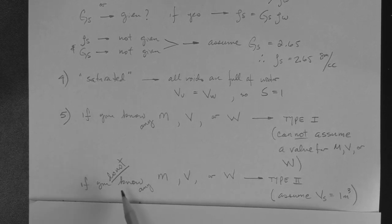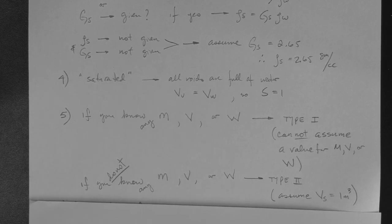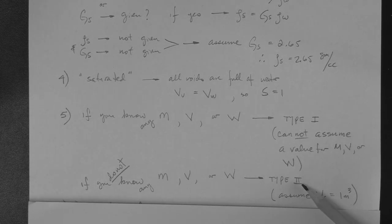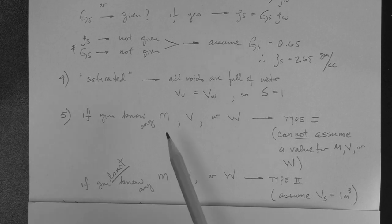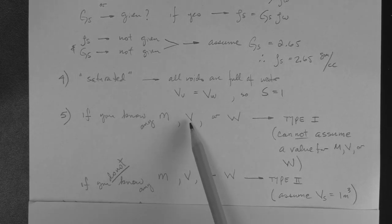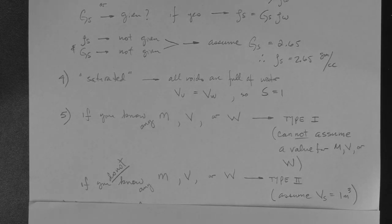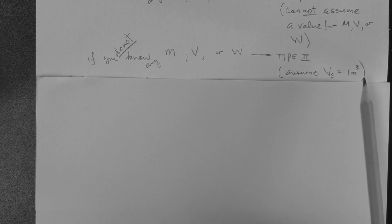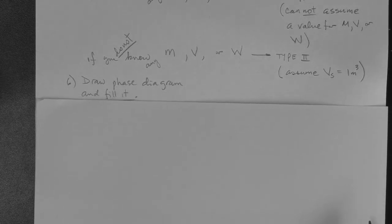Now, just to kind of say a few more things here. Let's say that you do not know any of these values, but you know, for example, the mass density of the soil. Well, if that's the case, that continues to be a type 2. Because the mass density is not a mass, it's not a volume, and it's not a weight. All right. We proceed. We drop to number 6.